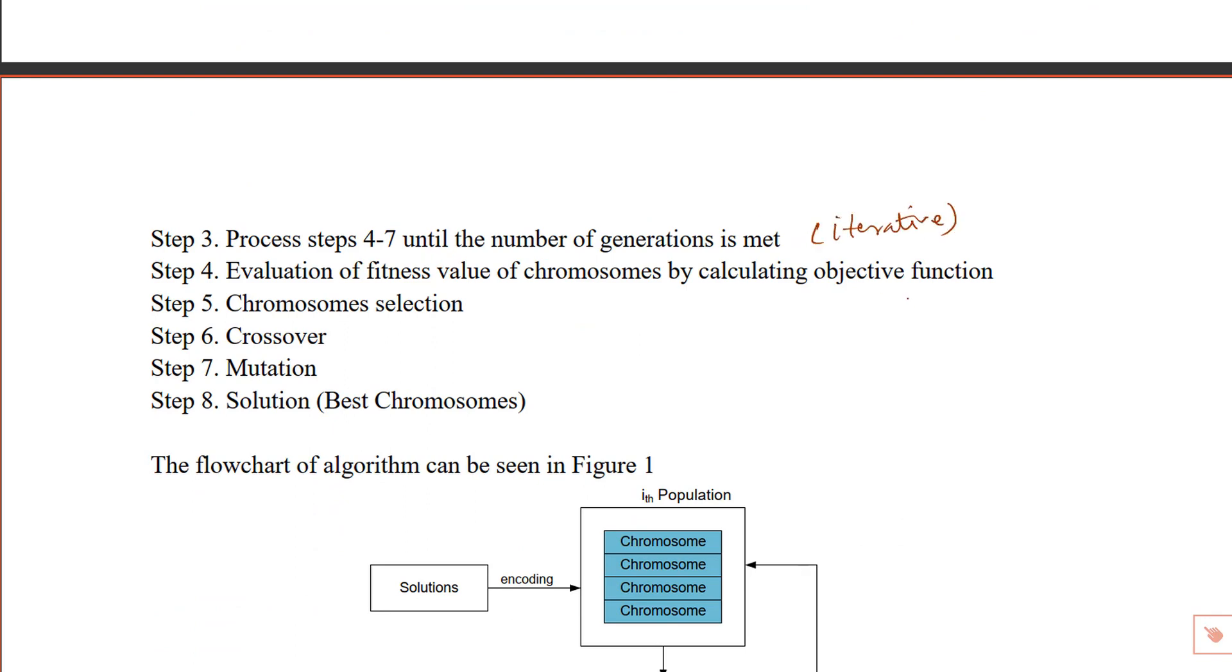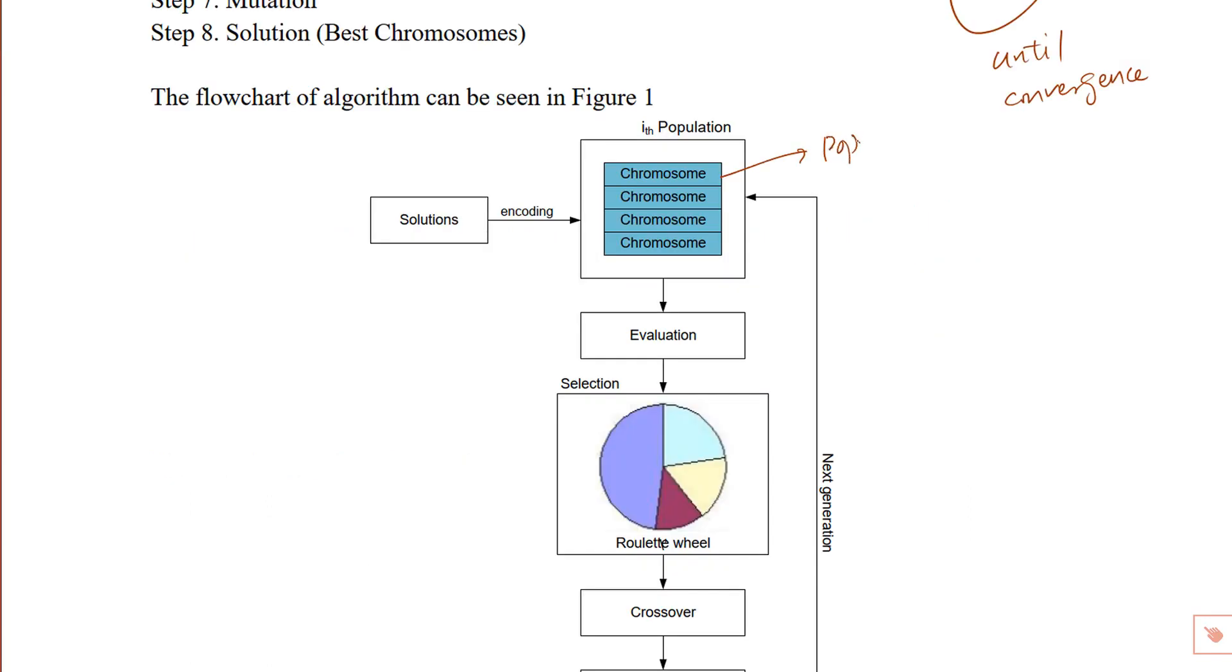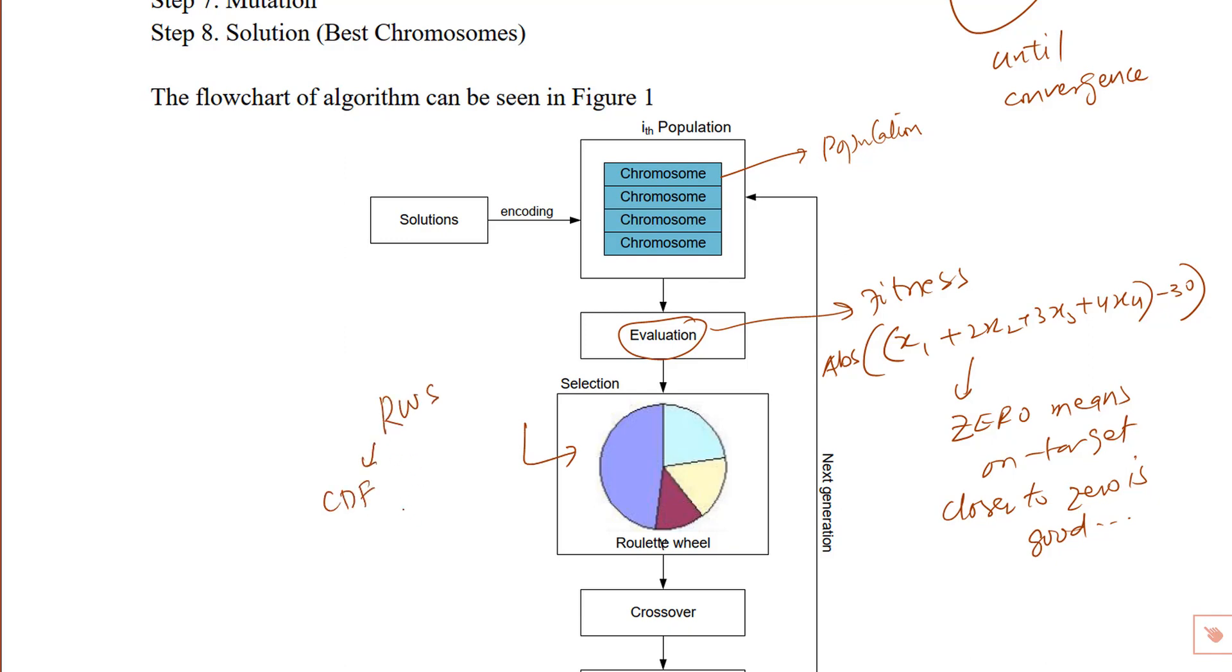Then repeat an iterative process until convergence is shown in this diagram. We have population, then compute the fitness of each chromosome in the population, which for our example is the absolute difference between x1 + 2x2 + 3x3 + 4x4 and 30. And the difference closer to zero is good and exactly zero means on target. Then based on the fitness values, we compute the fitness probabilities. And the survival of the fittest is then decided using roulette-wheel selection. And for roulette-wheel selection, we need to construct the CDF as discussed in Unit 4. Here we want to emphasize that this selection process is still stochastic and not deterministic. Why? Just to ensure diversity.